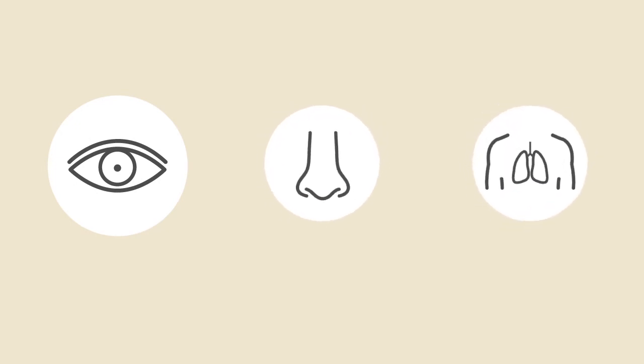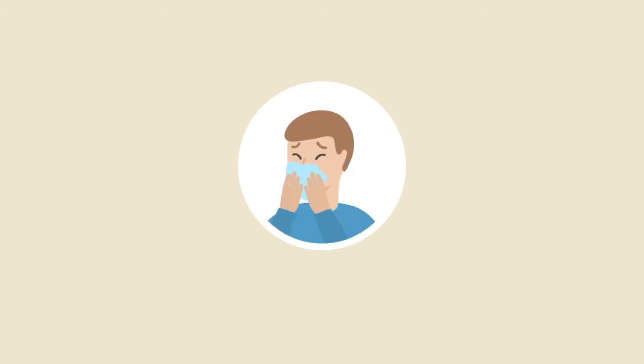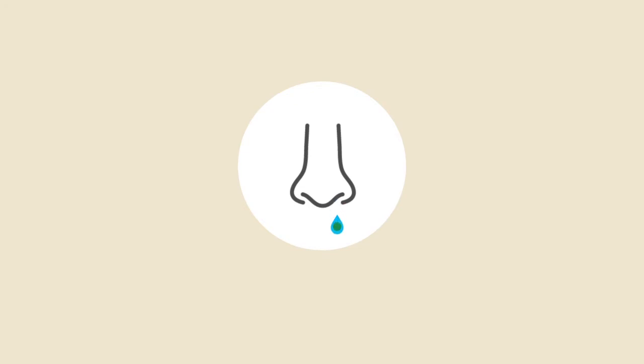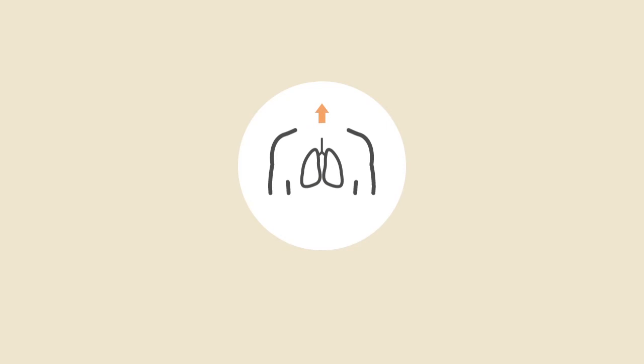It will cause you to get itchy, watery eyes so that you flush out whatever is in your eye. In your nose, it will cause you to get itchy, blow your nose, have nasal mucosal discharge — otherwise known as a snotty nose — to get you to clean out whatever is coming in. A runny nose is also created because it helps flush out whatever is happening. In your lungs, this may manifest as a cough or increased mucus production to try to mop up and clean up whatever is going inside.